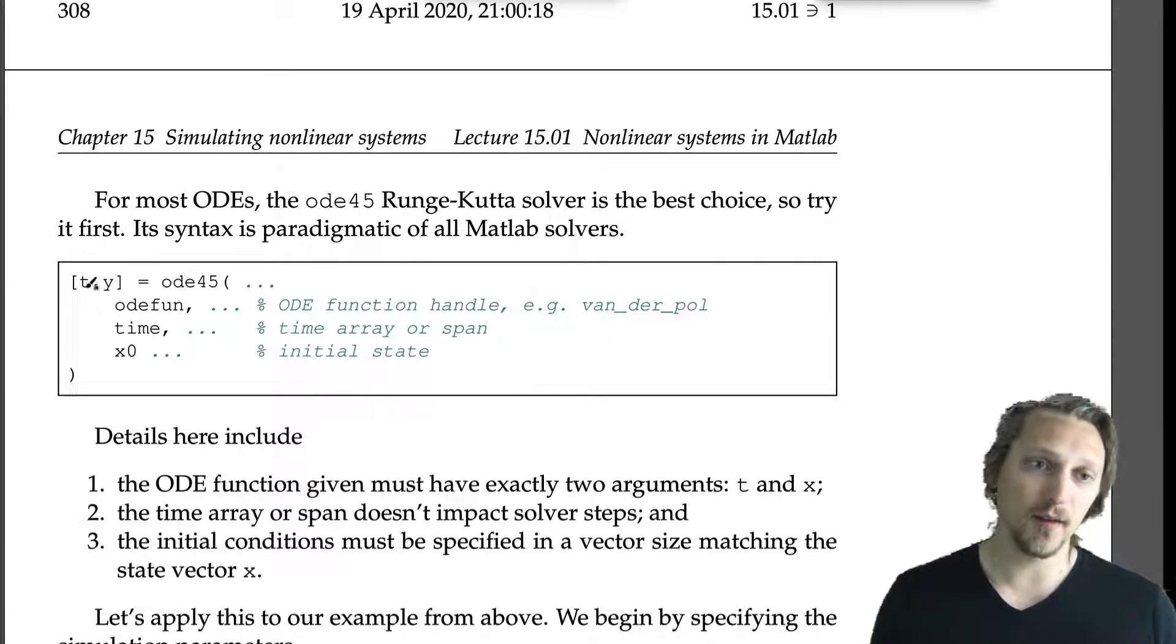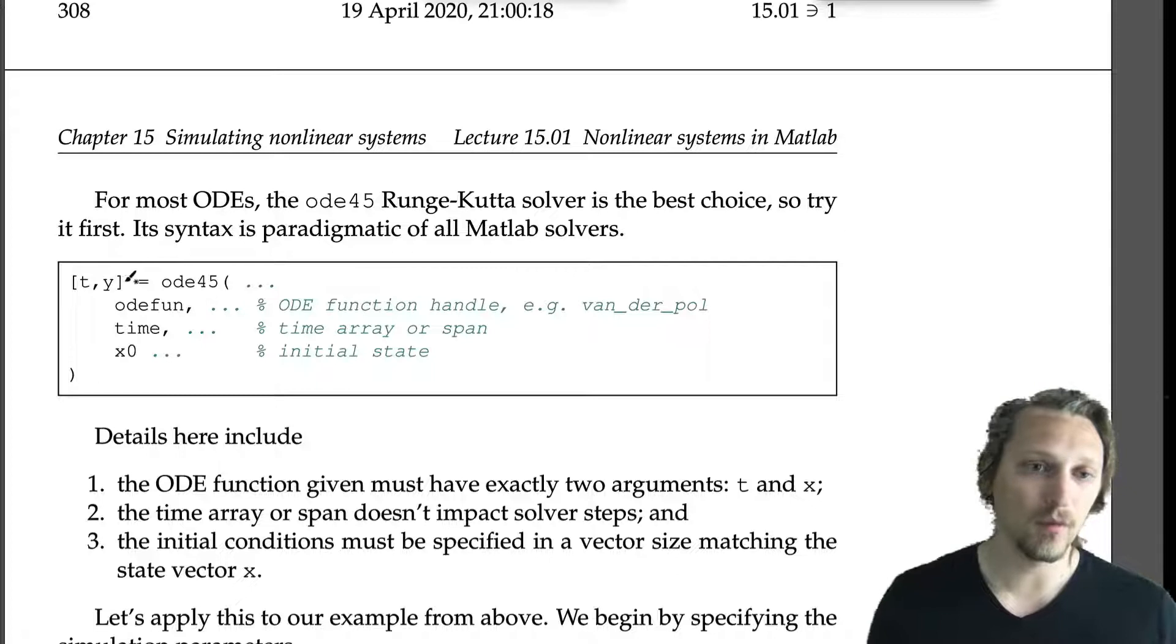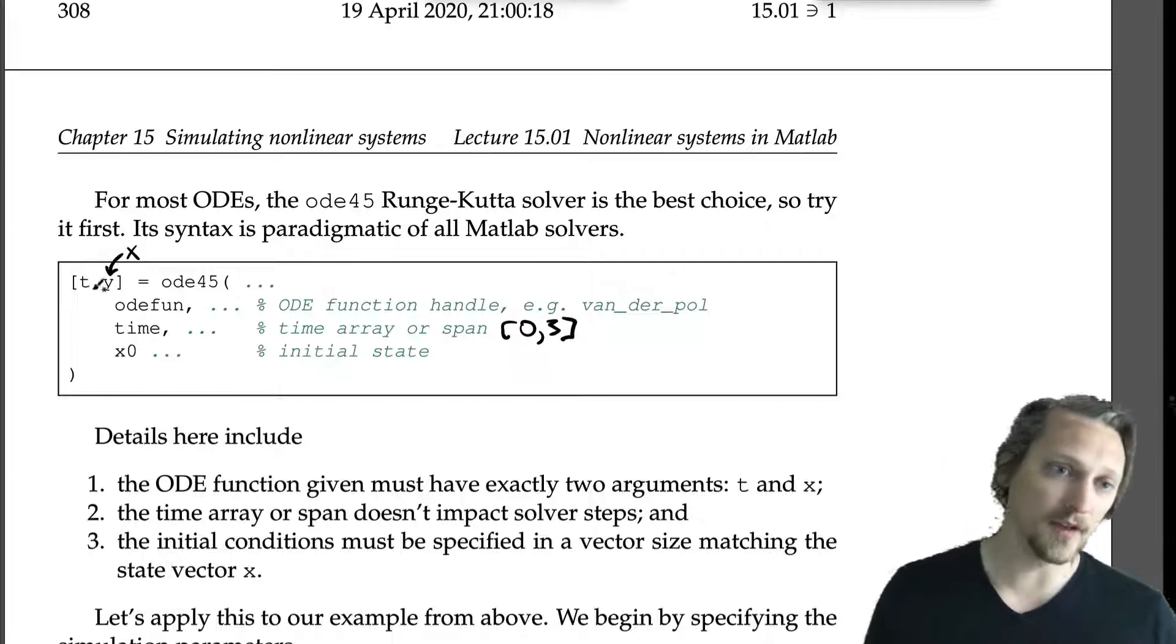Its syntax is paradigmatic of all MATLAB solvers. So it returns time and a response—we could have used x there, probably should have used x there. ODE45, so that's the call to the solver. We give it the function handle for the function file, so above it was van_der_pol, so that's what it would be here. You could have used x there, either a time array or a span of time, so from 0 to 3 seconds.